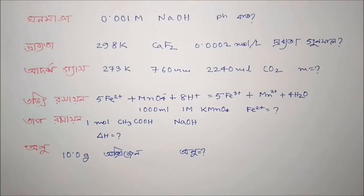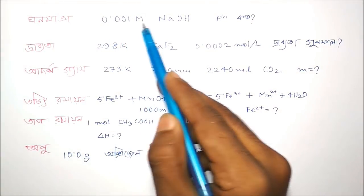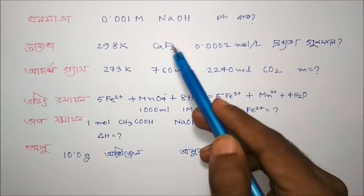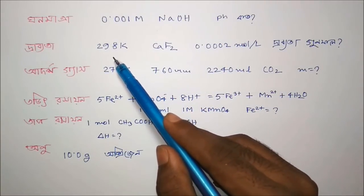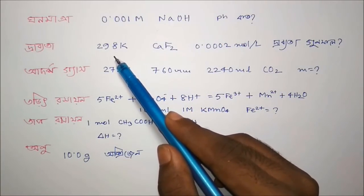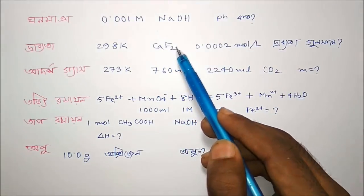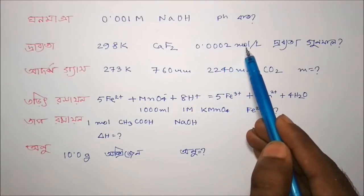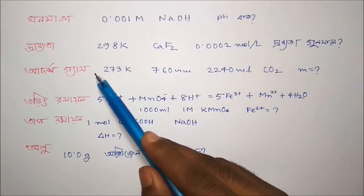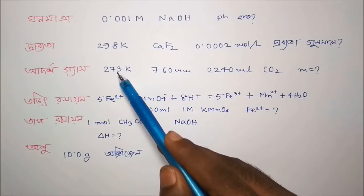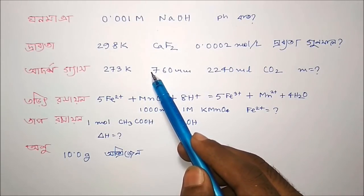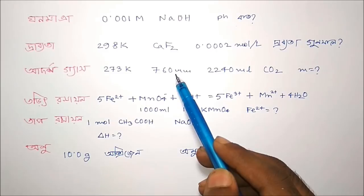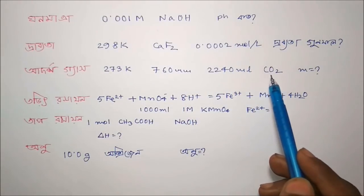The problem: the pH of 0.001 molar sodium hydroxide — the pH is for a 0.002 mol per liter solution.